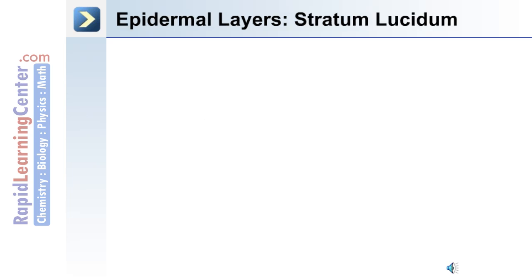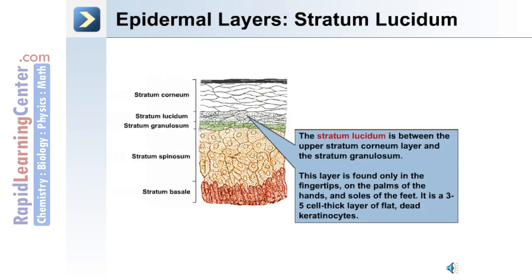The next layer of the epidermis is the stratum lucidum. This is between the upper stratum corneum layer and the next layer, which is the stratum granulosum. It's found typically only in the fingertips, on the palms of the hands, and the sole of the feet. This is the thickest portion of the skin and is a three to five cell thick layer of flat dead keratinocytes.